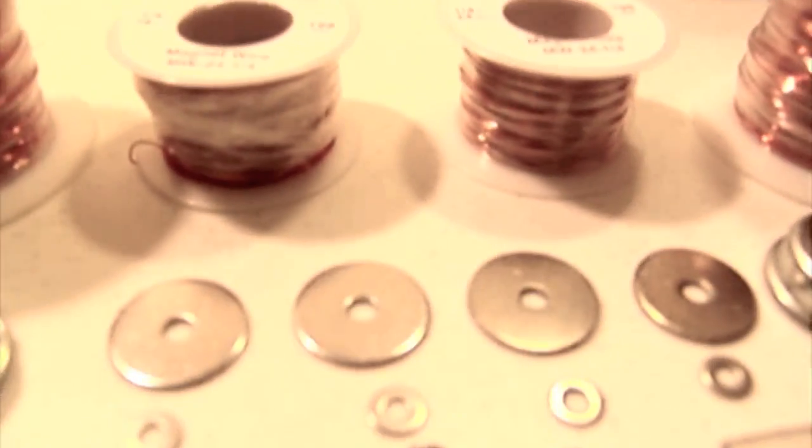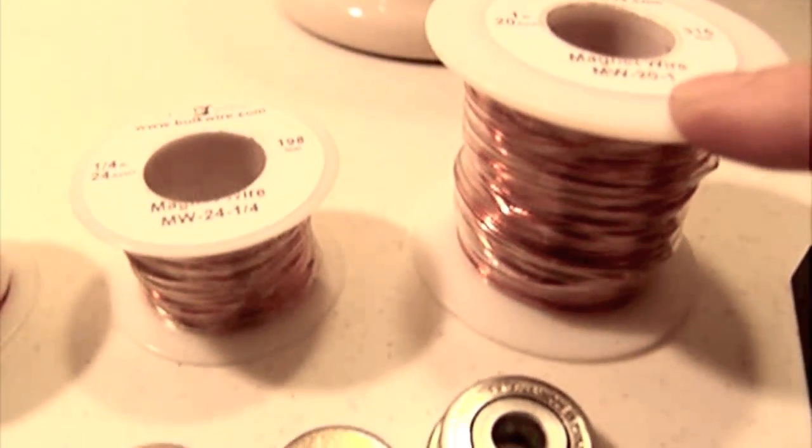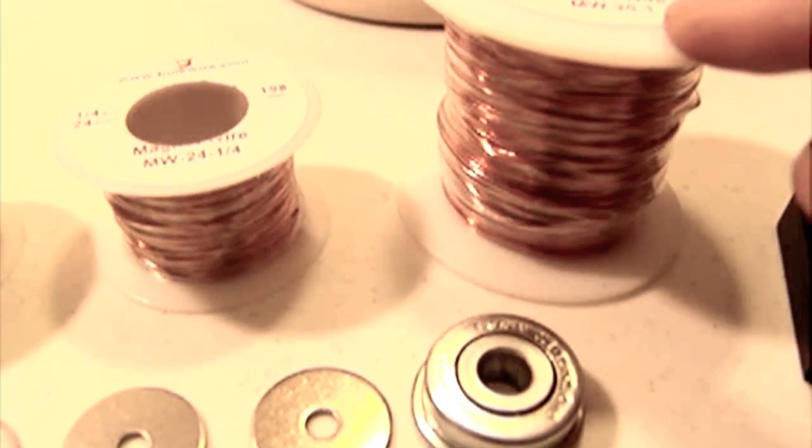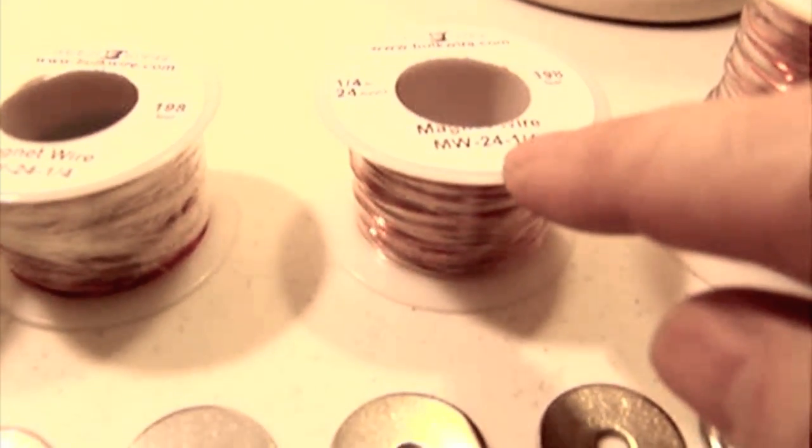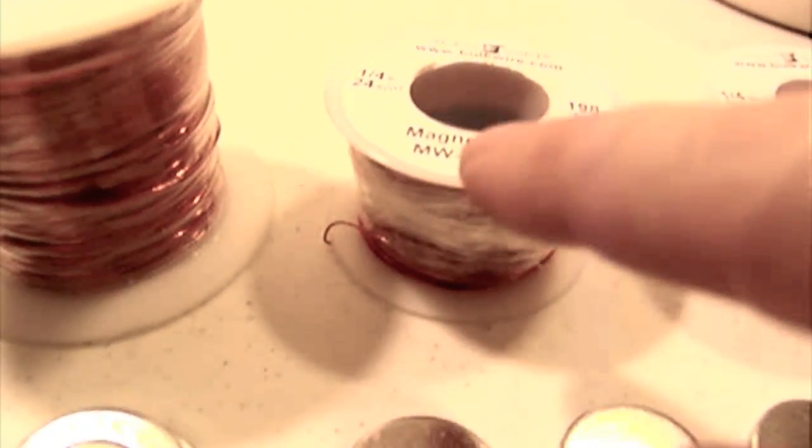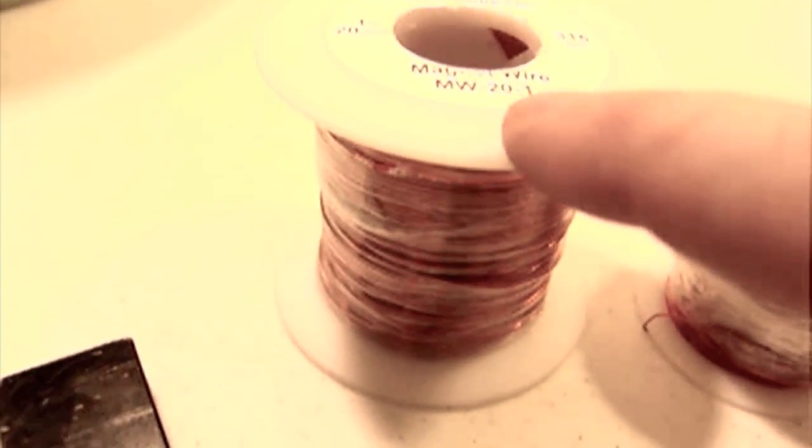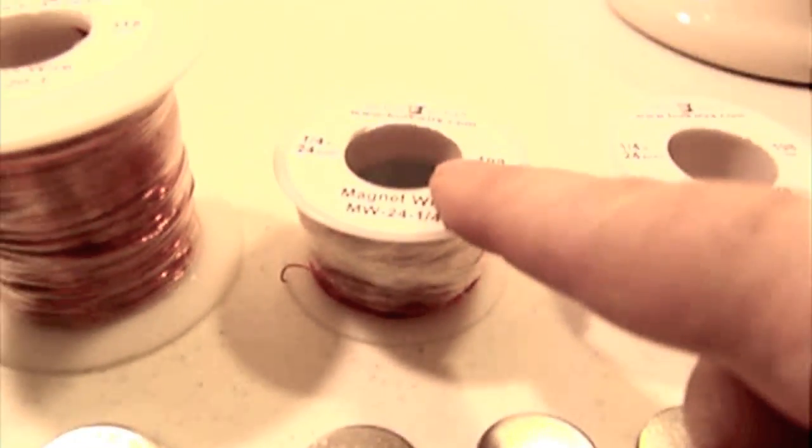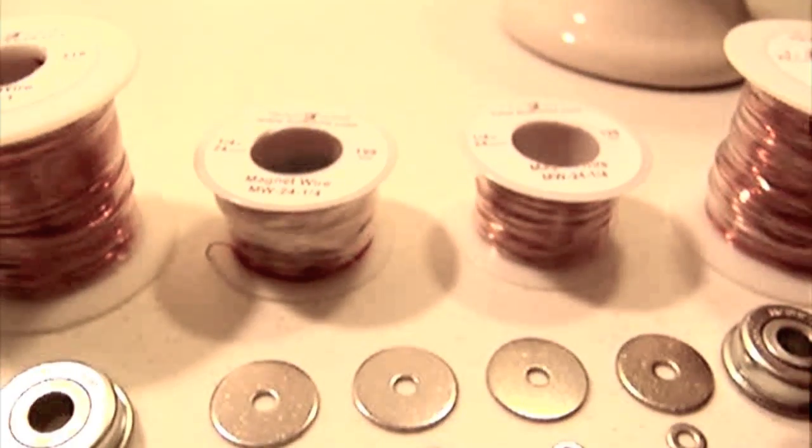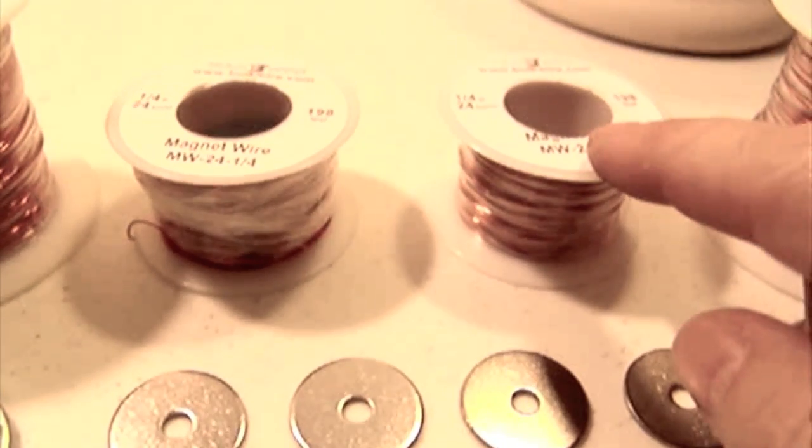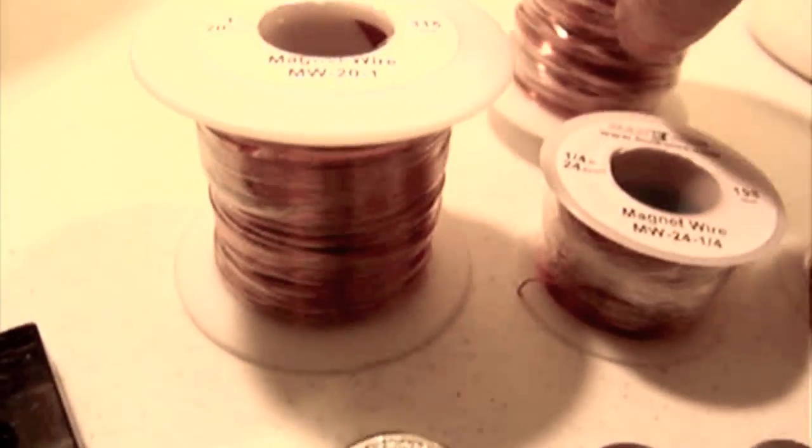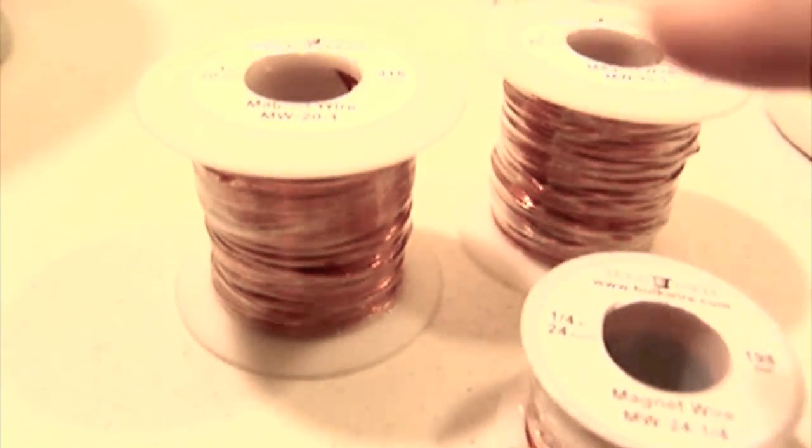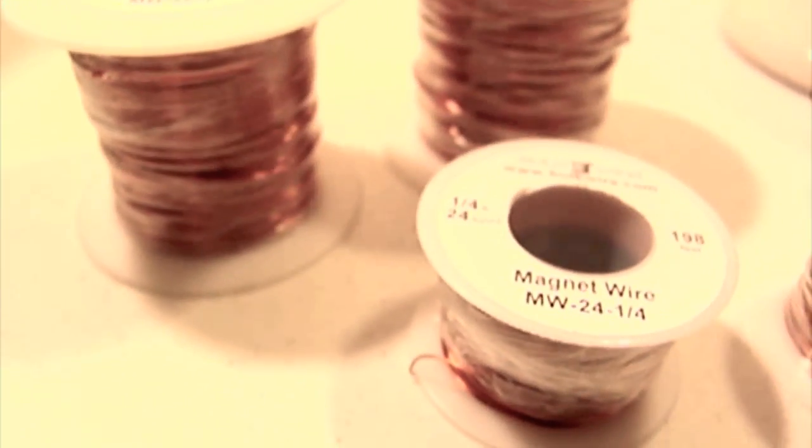Then we've got four spools of magnet wire. This is MW20-1. This is MW-24-1 fourth, and the same wire again. Then we're back up to the larger diameter, 20 gauge wire here as well. This is 315 feet on this spool. This is 198 feet on this spool. What makes this nice to have different spools of wire here paired off is that we know that both of these spools of wire are really close to being exactly the same length. Then these two larger spools here at 315 feet, we know they're the same length as well. So it keeps things easy to make.